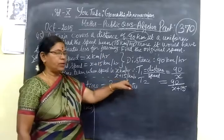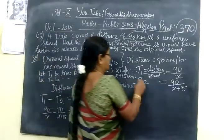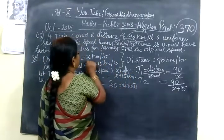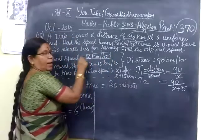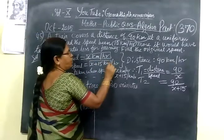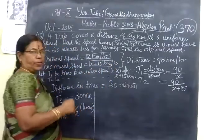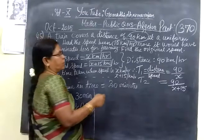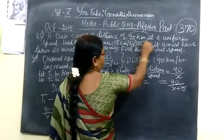The usual speed is x km per hour. That means speed increased, so x plus 15 km per hour.